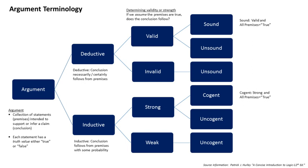Argument by analogy may be thought of as argument from the particular to the particular. An argument by analogy may use a particular truth in a premise to argue towards a similar particular truth in the conclusion. For example, if (A) Plato was mortal, and (B) Socrates was like Plato in other respects, then asserting that (C) Socrates was mortal is an example of argument by analogy, because the reasoning proceeds from a particular truth in a premise — Plato was mortal — to a similar particular truth in the conclusion, namely that Socrates was mortal.